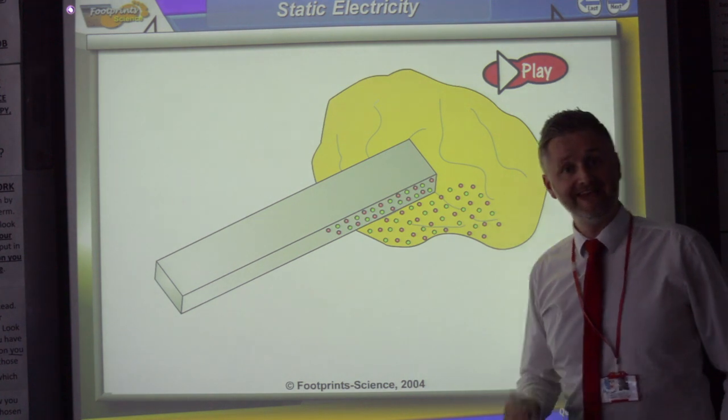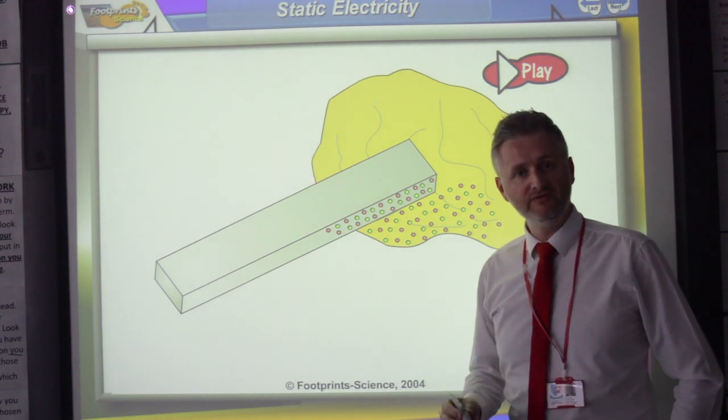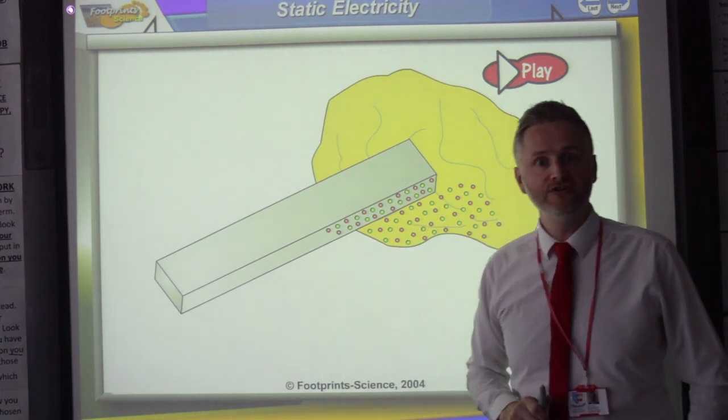Einstein was dyslexic. You do not need to be able to write and read incredibly well to be a good scientist. But what you do need is a good imagination.